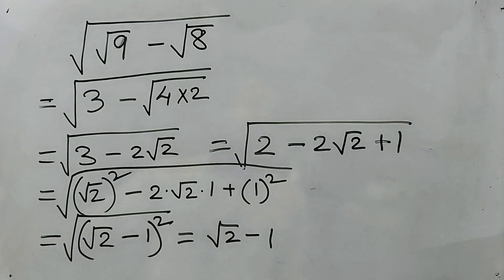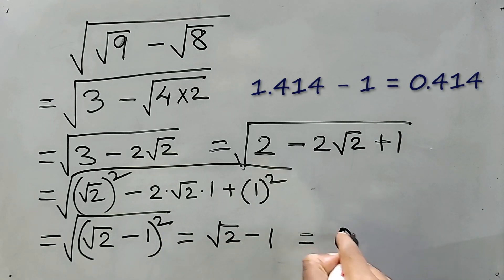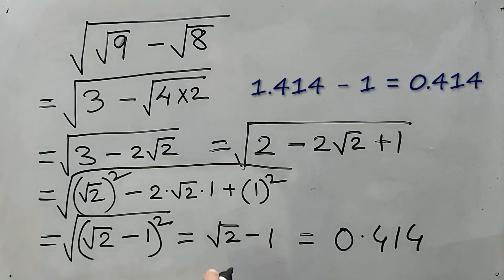Now, if you would like to go a little deeper, we should know in the higher classes, we know the value of square root of 2. That is 1.414. Now, this one is equal to 1.414 minus 1. The final value will be 0.414. See, if you're getting up to this, it is fine. This is absolutely fine. No problem with this. But if you'd like to go a little deeper, then you may find this value also.